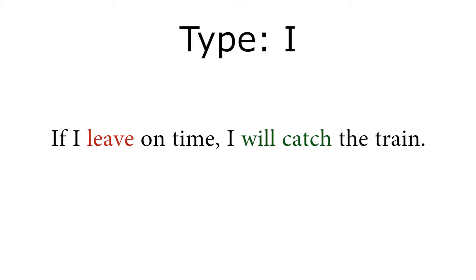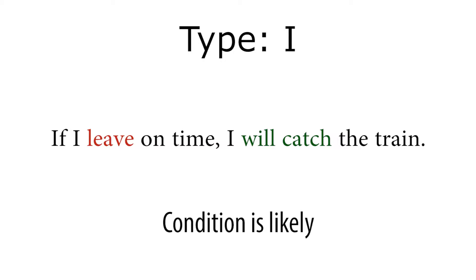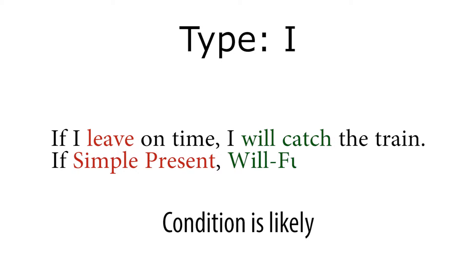And this is Type 1. There are three types, which I'm going to cover all in this video. The first type is the one I just used — you can use it to say that something is likely going to happen. It's just a simple present: 'If I leave on time, I will catch the train.' And it uses the will-future form — will catch, will make, will eat. Just very simple.